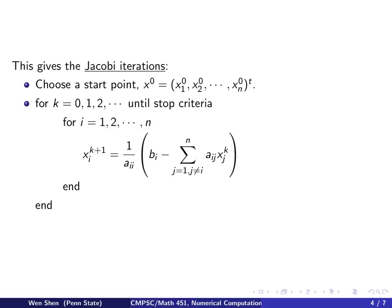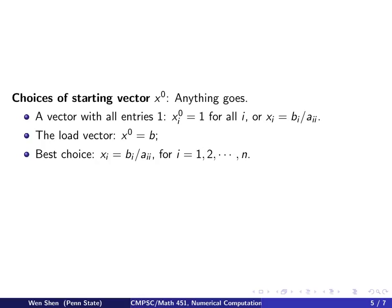So two more things to talk about. One is how to choose a reasonable starting point, and another will be what are suitable stop criterias to be used. Let's look at the starting vector. So we haven't talked about convergence analysis yet, but this is a linear fixed point iteration. So later on, we will learn that if it converges, it converges for any initial guess. So anything goes.